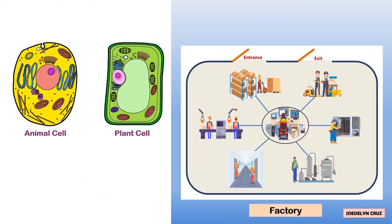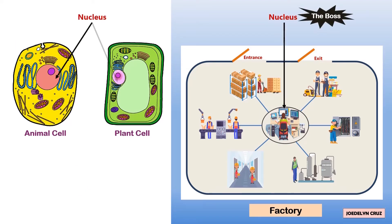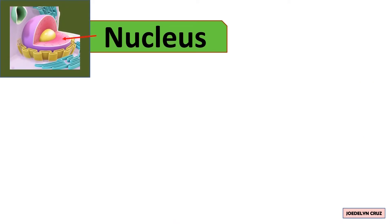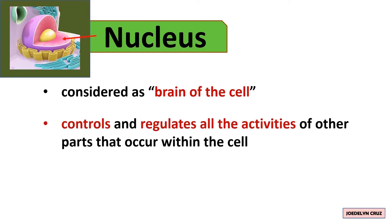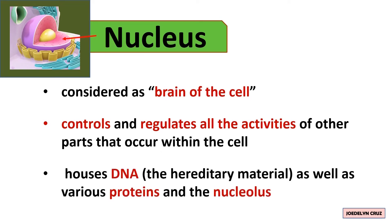Inside the factory there is a boss, and the boss represents the nucleus. It controls all the movements happening inside the factory and tells how the factory should operate. The nucleus is considered the brain of the cell because it controls and regulates all the activities of other parts that occur within the cell. It also houses DNA, the hereditary material, as well as various proteins and the nucleolus.